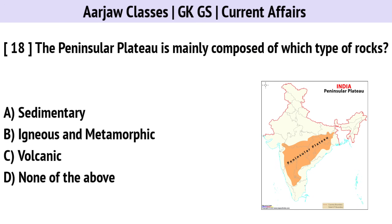The Peninsular Plateau is mainly composed of which type of rocks? The correct option is B — Igneous and Metamorphic Rocks.